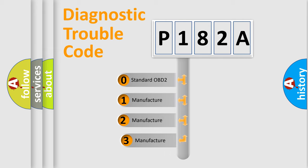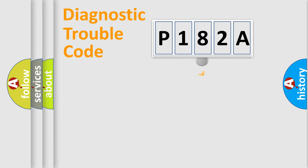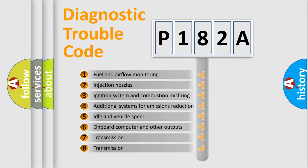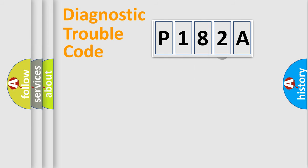If the second character is expressed as zero, it is a standardized error. In the case of numbers 1, 2, 3, it is a manufacturer-specific expression of the car-specific error. The third character specifies a subset of errors. The distribution shown is valid only for the standardized DTC code. Only the last two characters define the specific fault of the group.